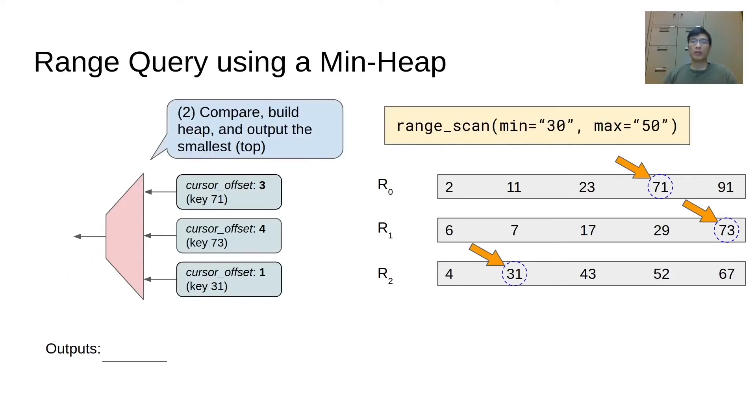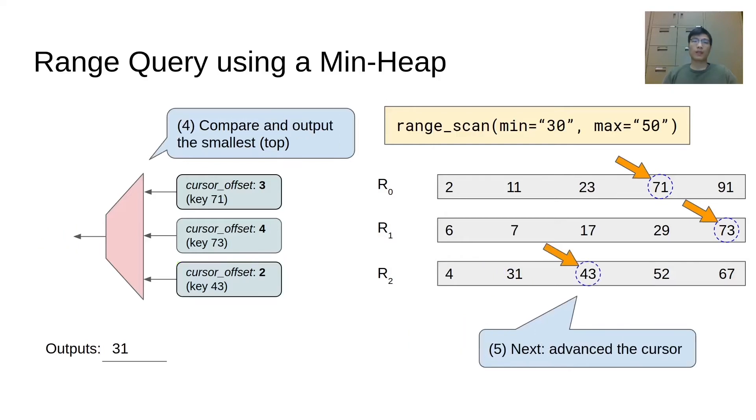After that, we compare those keys, build the min-heap, and output the smallest key, 31, which is on R2. Afterward, to retrieve the subsequent keys, the cursor on R2 should be advanced to skip the key being reached. Then, we update the min-heap and output the key 43, which is the smallest key under the new cursors.